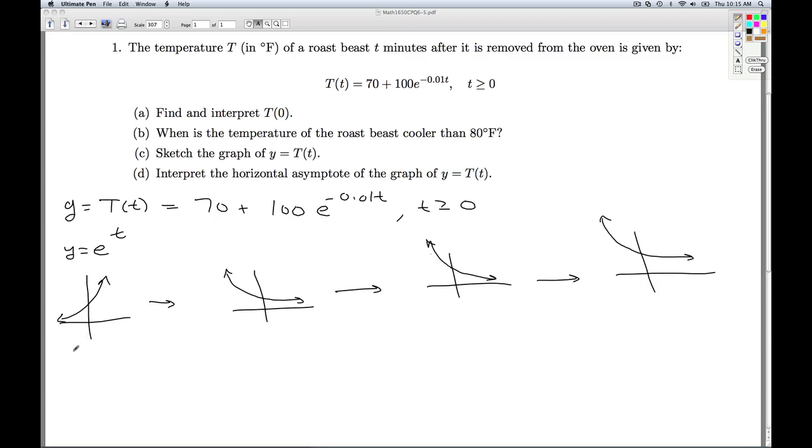The initial horizontal asymptote was y equals 0. And since I'm shifting it up 70, that's going to give me the horizontal asymptote here of y equals 70.